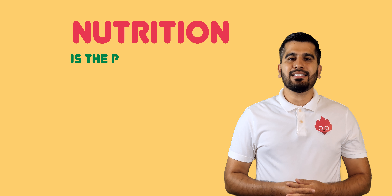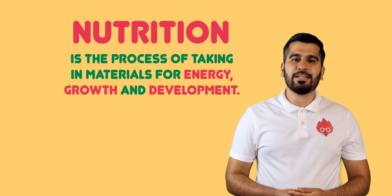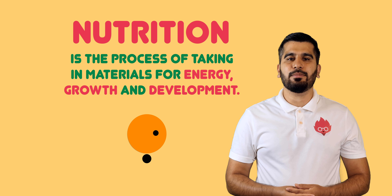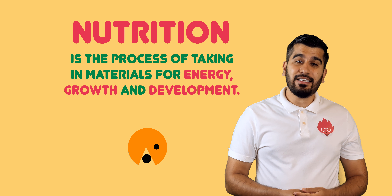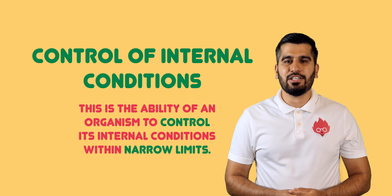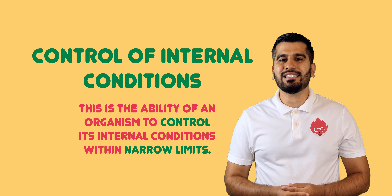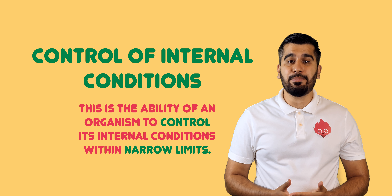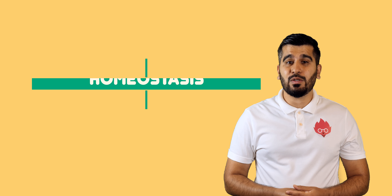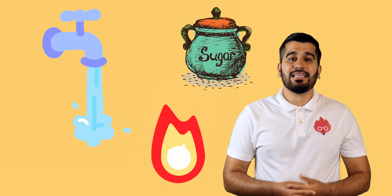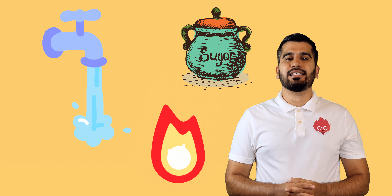Nutrition is the ability of taking in material for energy, growth and development. And finally, control of internal conditions — this is the ability of an organism to control its internal conditions within narrow limits, known as homeostasis. Examples include temperature, water and glucose. Together, we can use these characteristics to classify something as living or not.